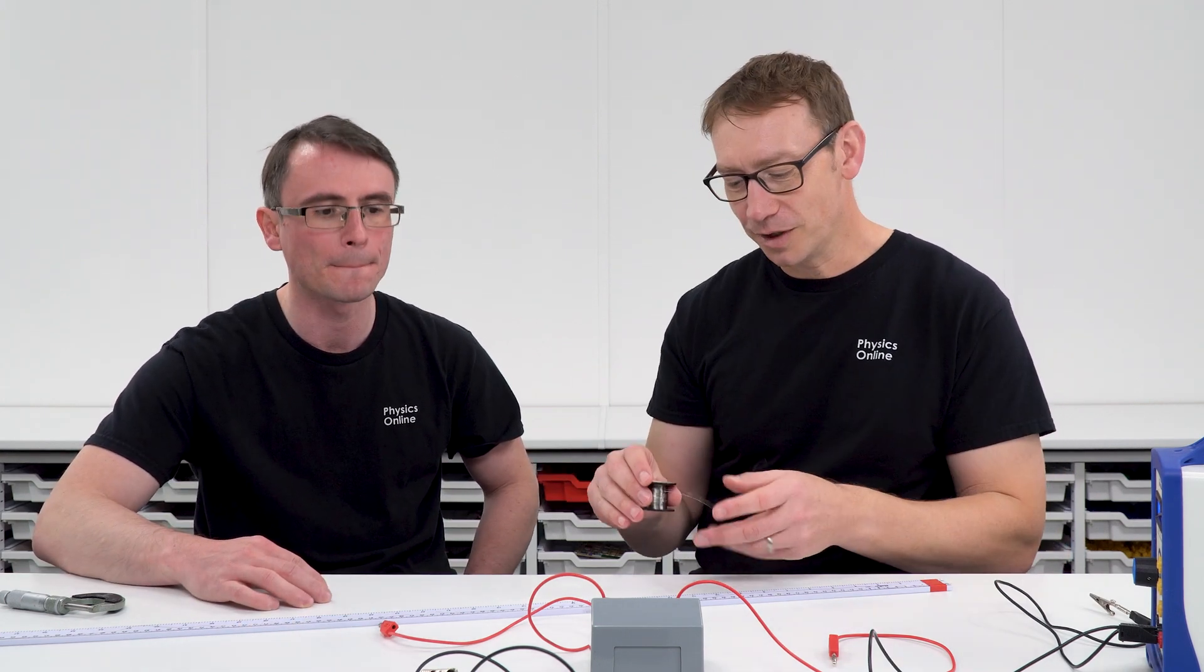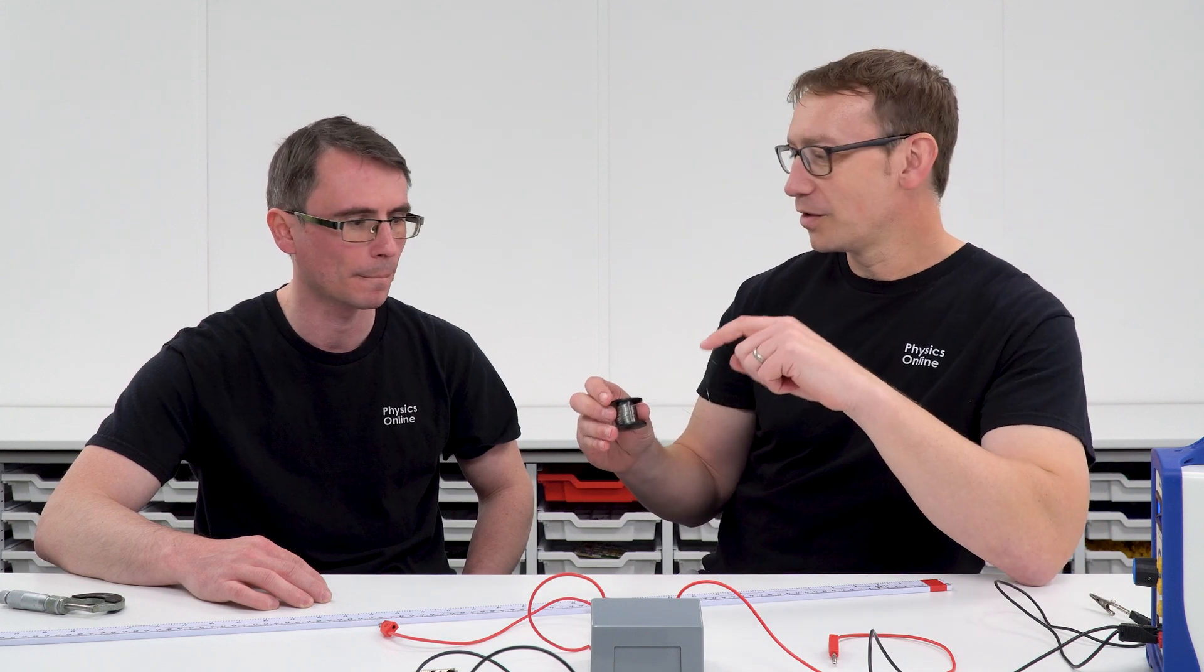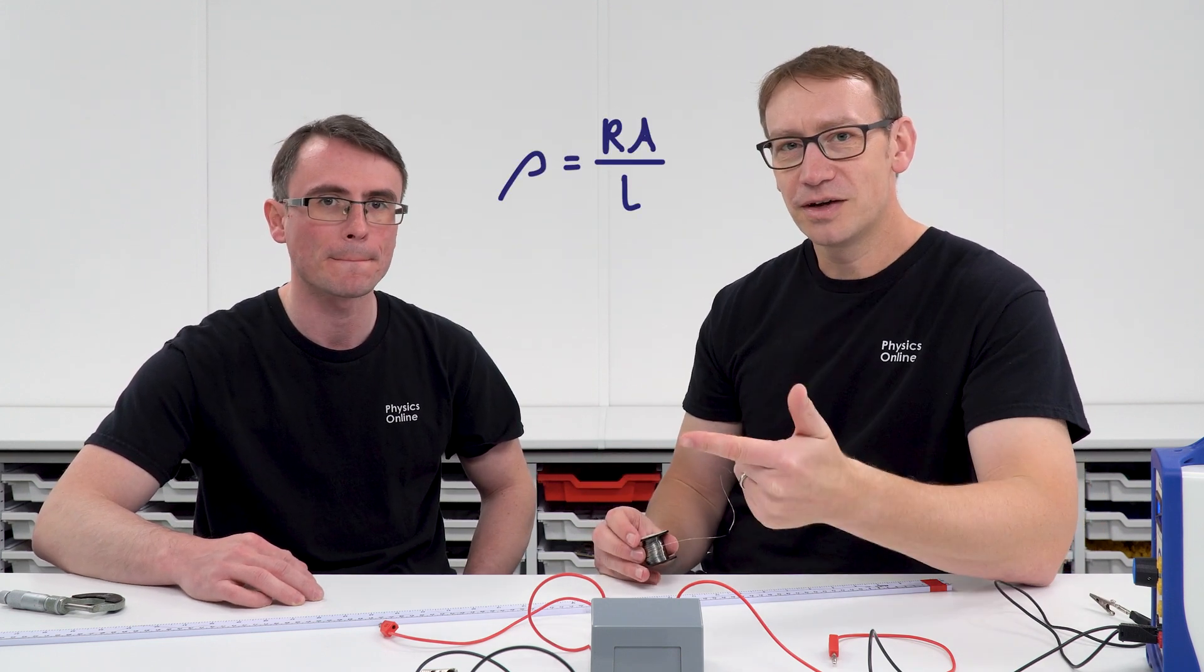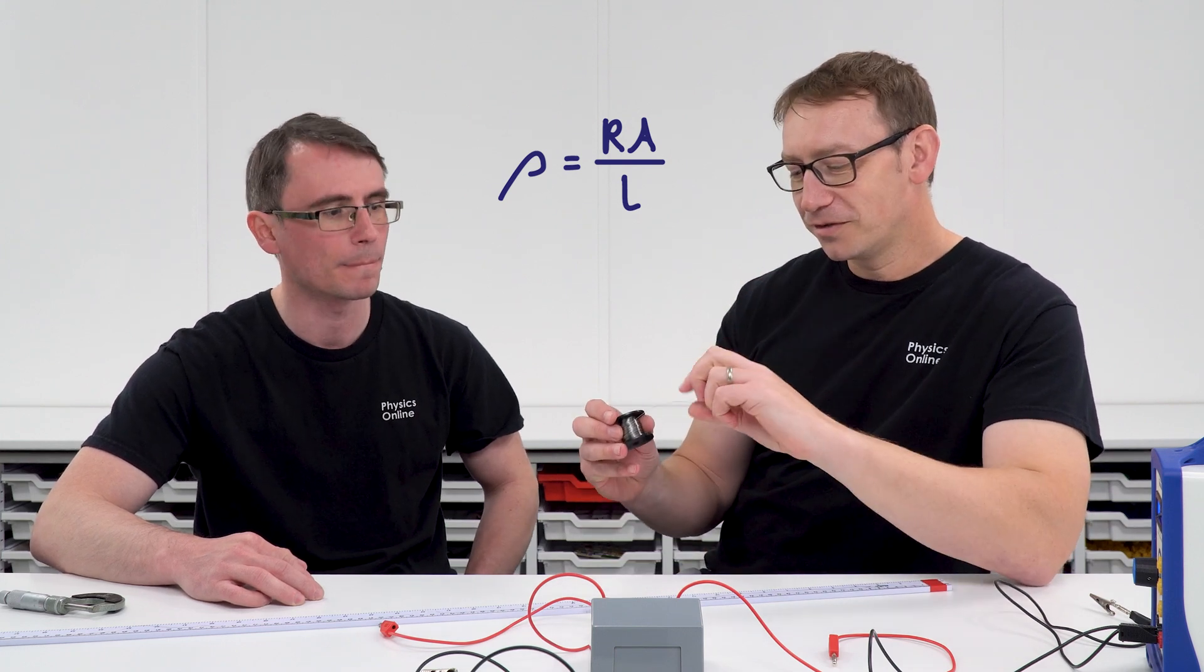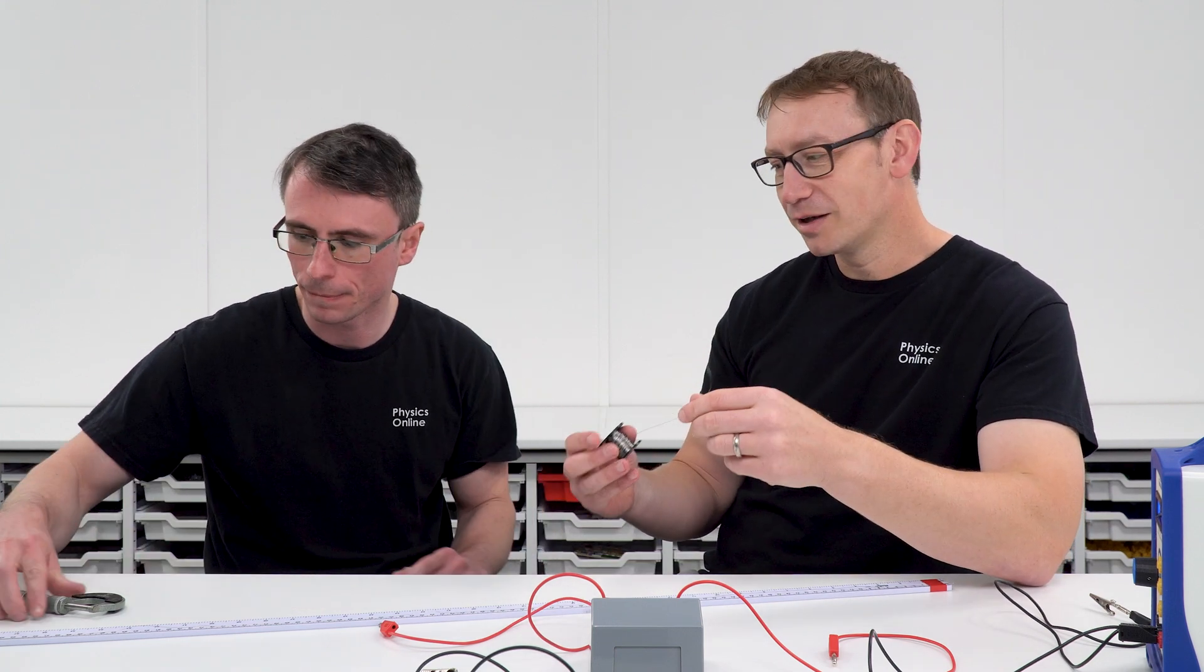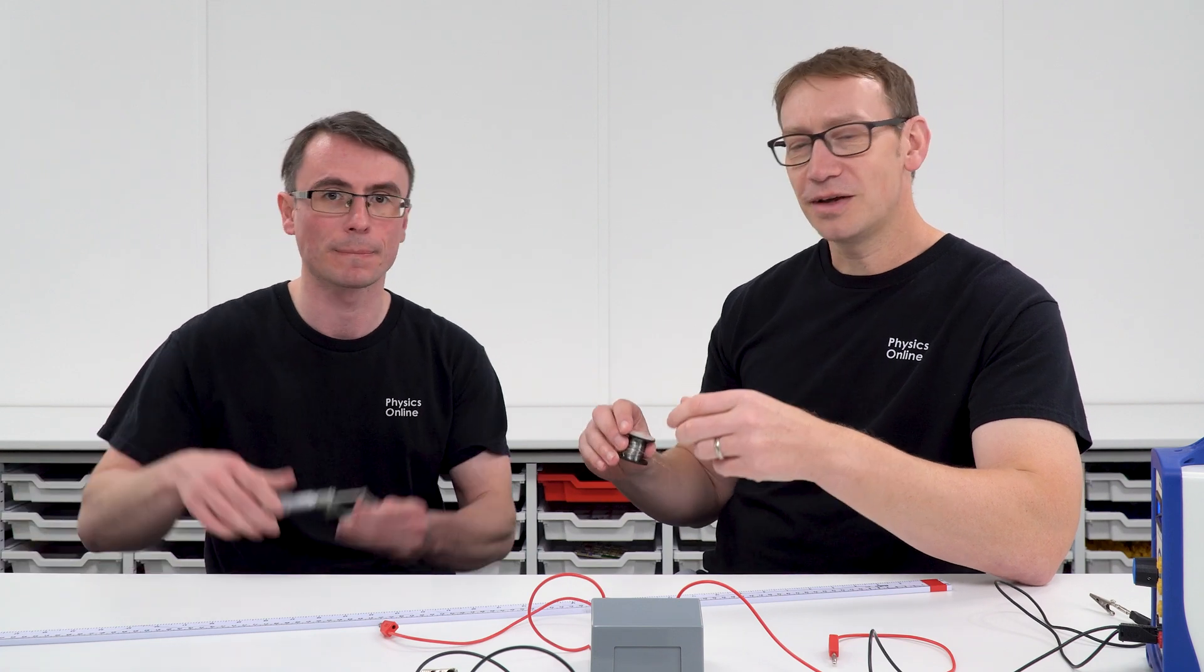So we've got some Constantin wire in this case but you can use other kinds whatever you might be given by your teacher. In order to work out the resistivity we need to know the resistance of a certain length of wire of a known cross-sectional area. So the first thing is to measure the cross-sectional area. The best way to do this is with a micrometer.